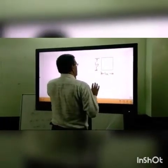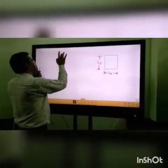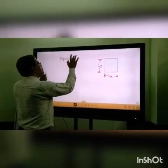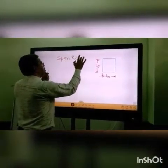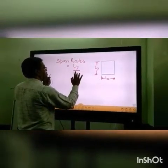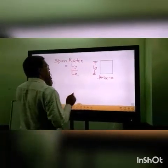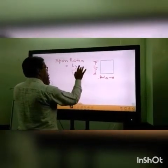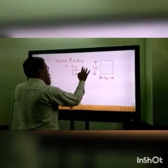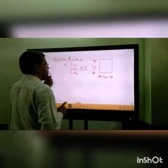By taking a span ratio of these two spans, span ratio equals LY by LX. As per IS-456-2000 code, if this ratio is less than or equal to 2, then we can say that this slab is a two-way slab.